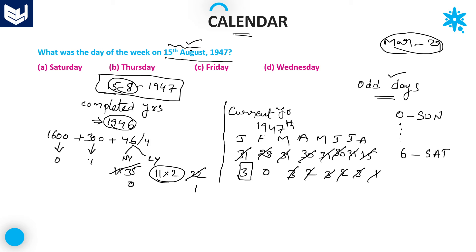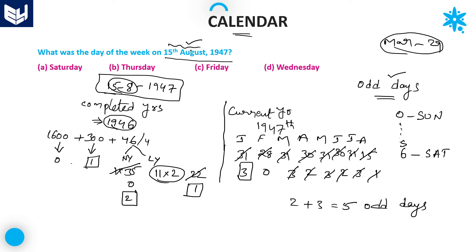Finally, total odd days from both sides: left-hand side is 0 + 1 + 1 = 2, right-hand side is 3. Total: 2 + 3 = 5 odd days. If the number of odd days is 5, then that day is Friday. Therefore, our required answer is Friday. Option C is the right answer. In this way, we can solve these kinds of problems.